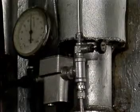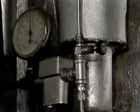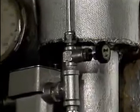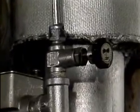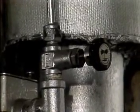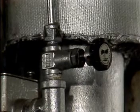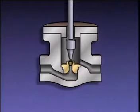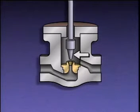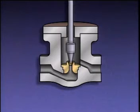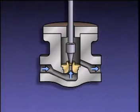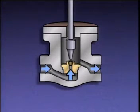This is another type of globe valve called a needle valve. Needle valves are usually smaller than other globe valves and are designed to give fine control of flow in small diameter piping. A needle valve has basically the same parts as other globe valves, but its disc is shaped differently, like a needle. The needle extends deep into the seating area of the valve.